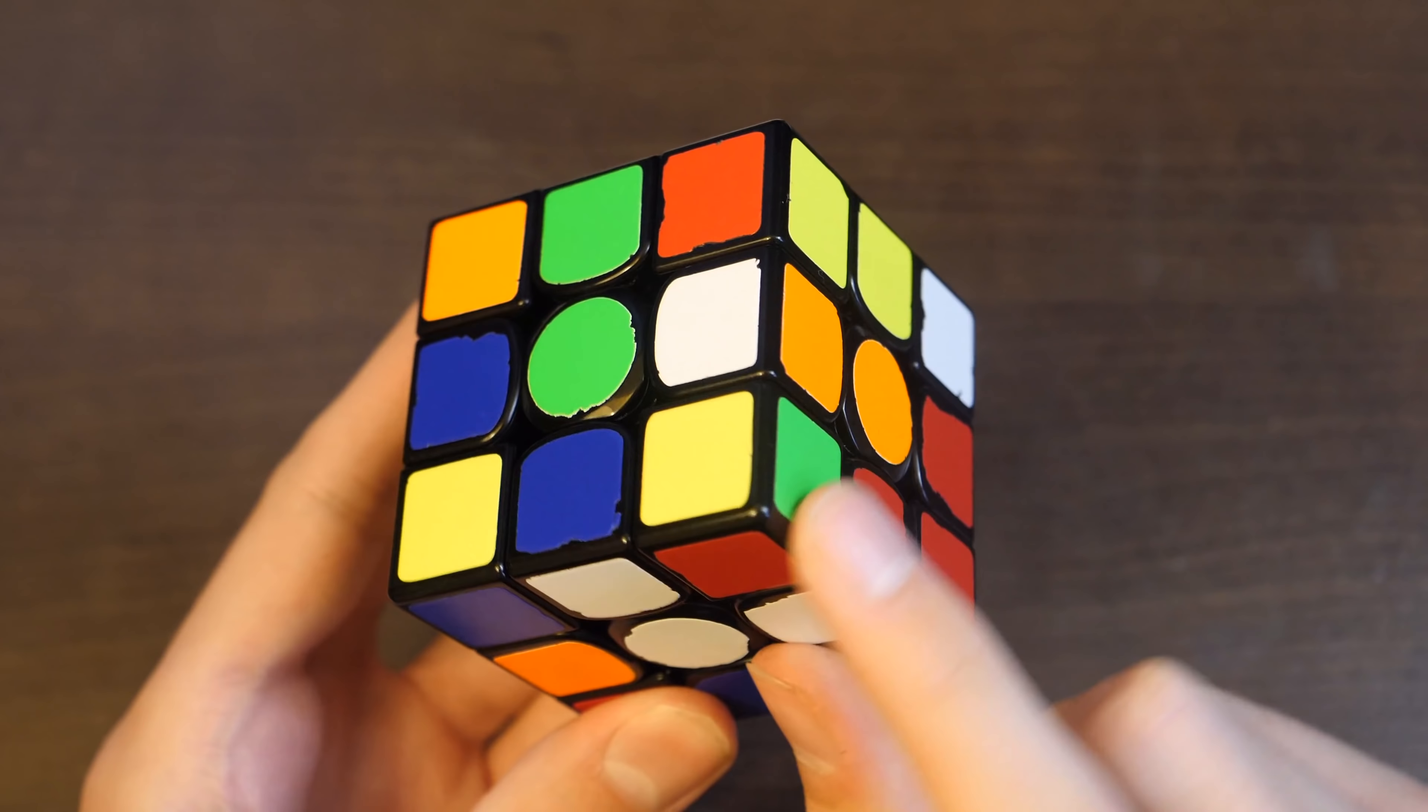The fourth solve has the easiest white cross yet. You've got these two that are solved relative to each other, just a D2 away, this one, and then this one. So this is a pretty easy cross solution and he just does it in the most straightforward way. And then he probably saw this in inspection and he goes for this pair first.